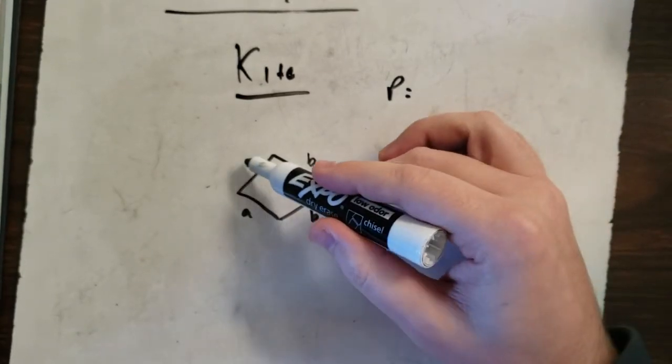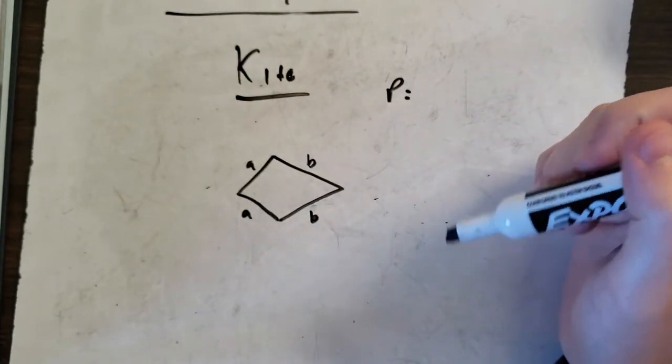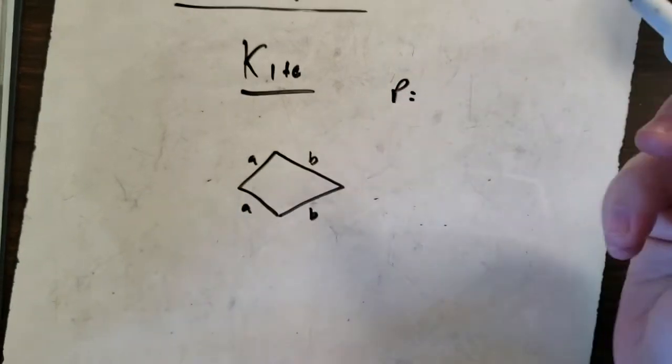So if this side up here is a letter or is a number, this side up here is the same number. If this is a number, that's the same one there. So perimeter, add up the outsides.